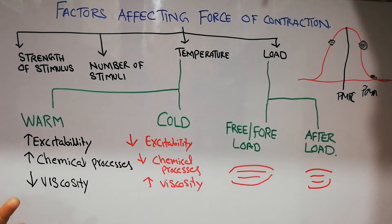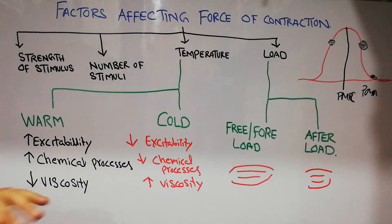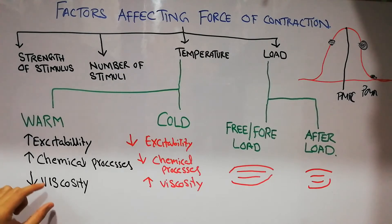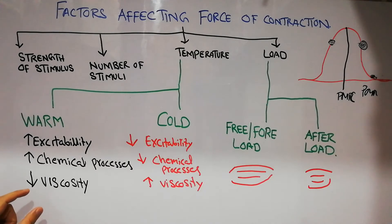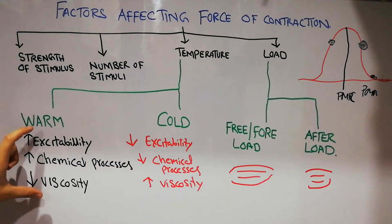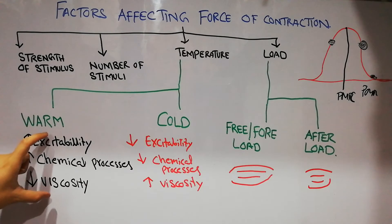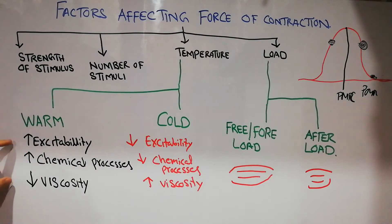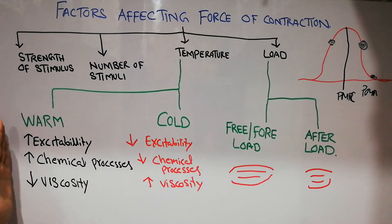Similarly, the chemical processes inside the muscle increase with increasing temperature. More chemical processes means more energy generation and more force of contraction. Also, the viscosity of the muscle decreases, so when the muscle is less viscous it will allow more force of contraction. These are the three basic factors which increase the force of contraction with increasing temperature.